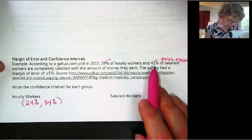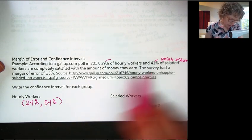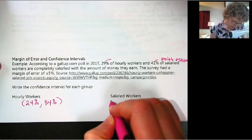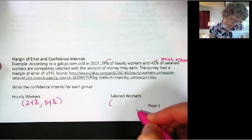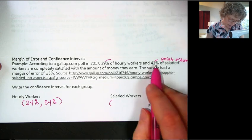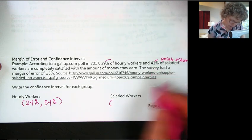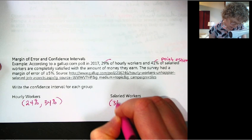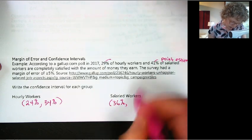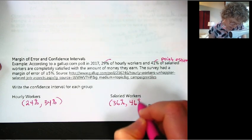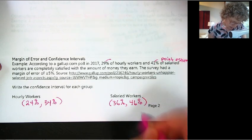Very similarly for salaried workers, it's also plus or minus 5 because they used the same sample size for this survey. So minus 5 gives 36%, to 46%.